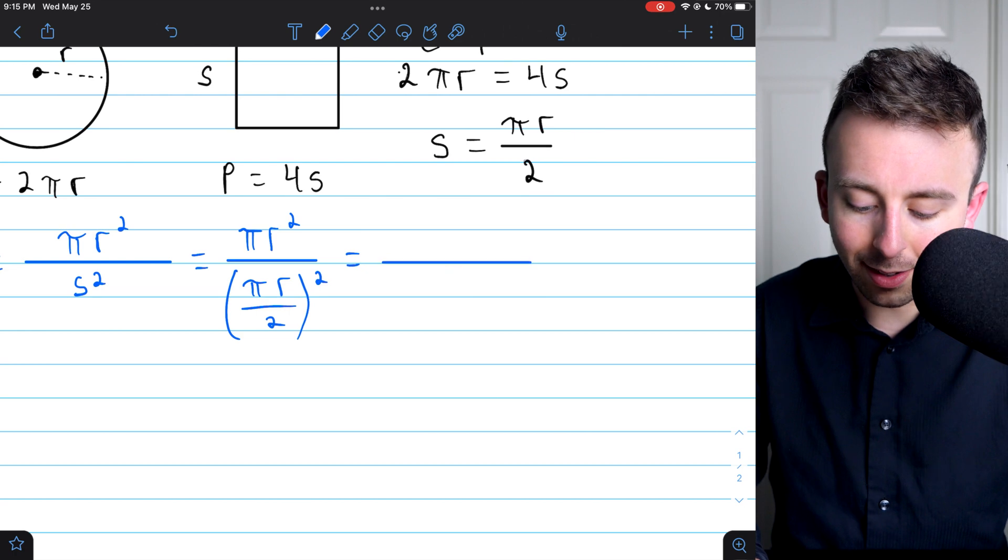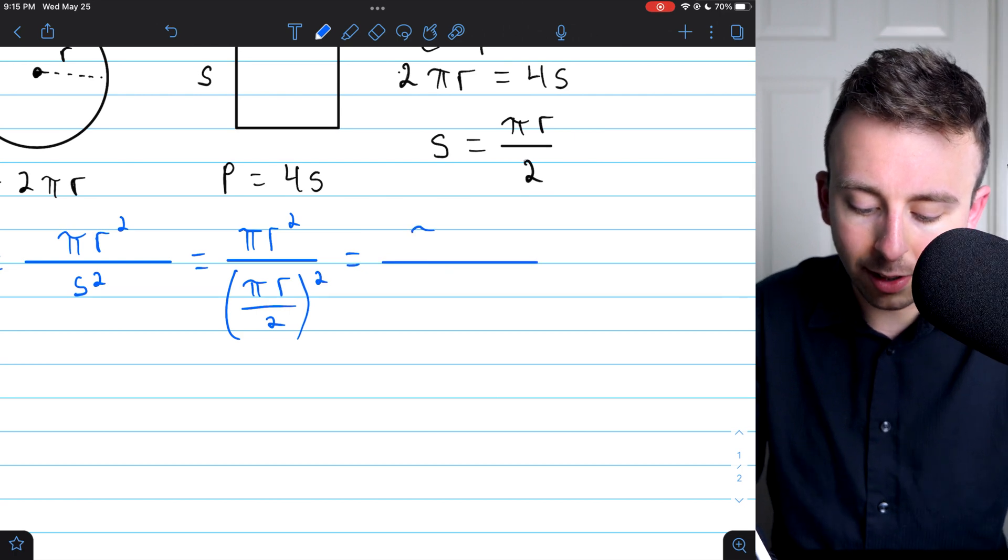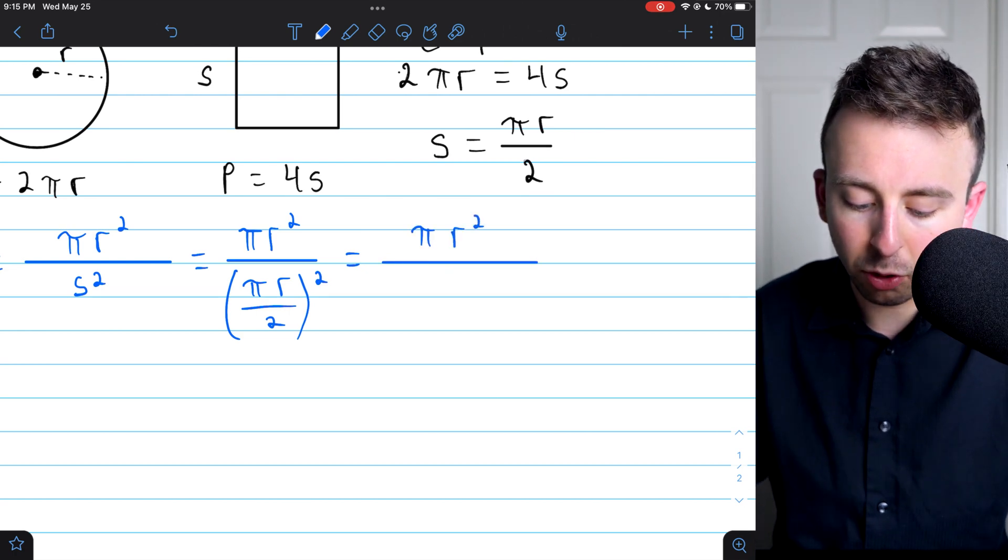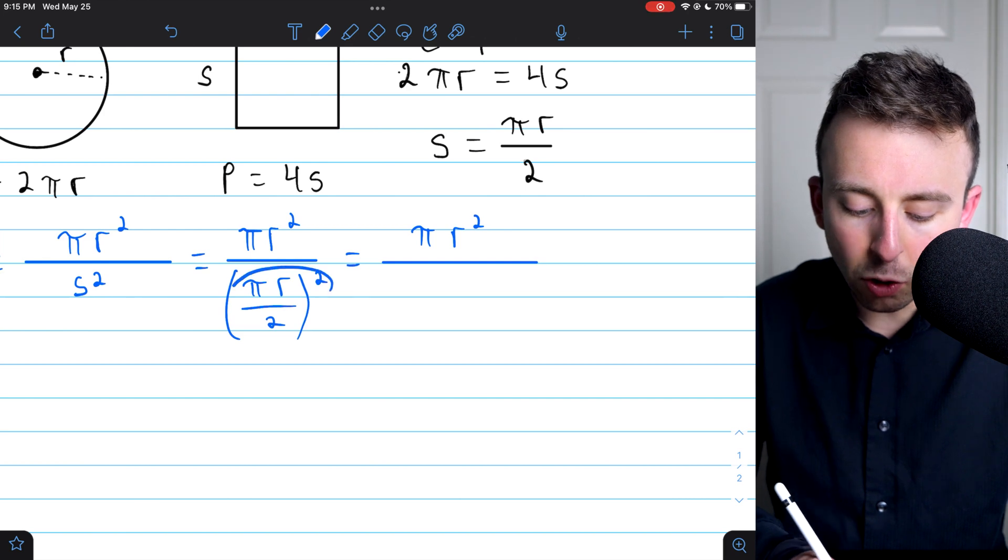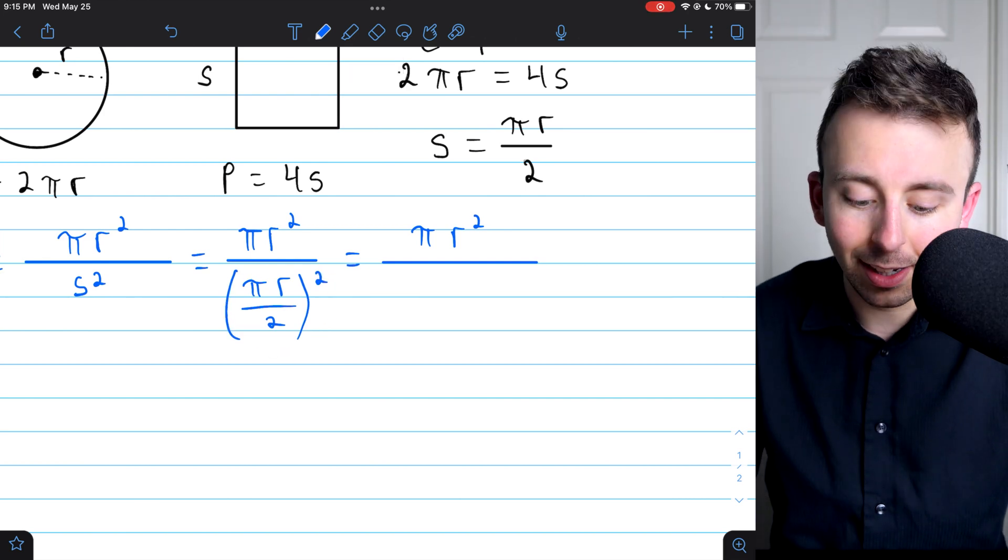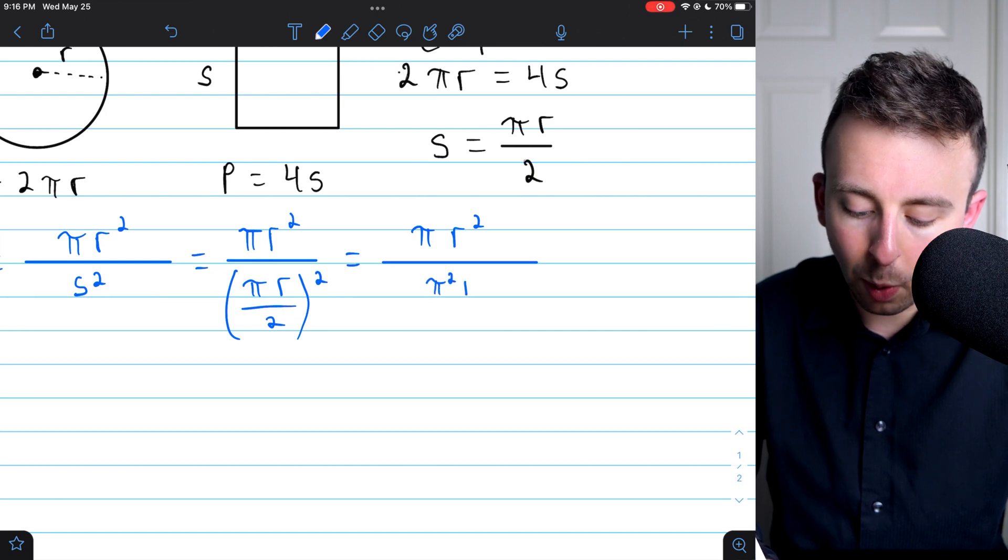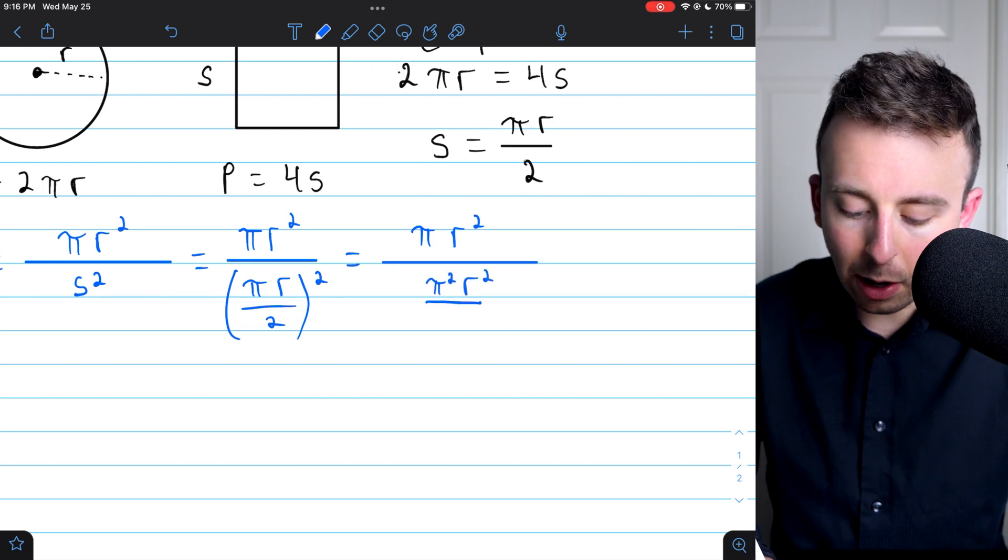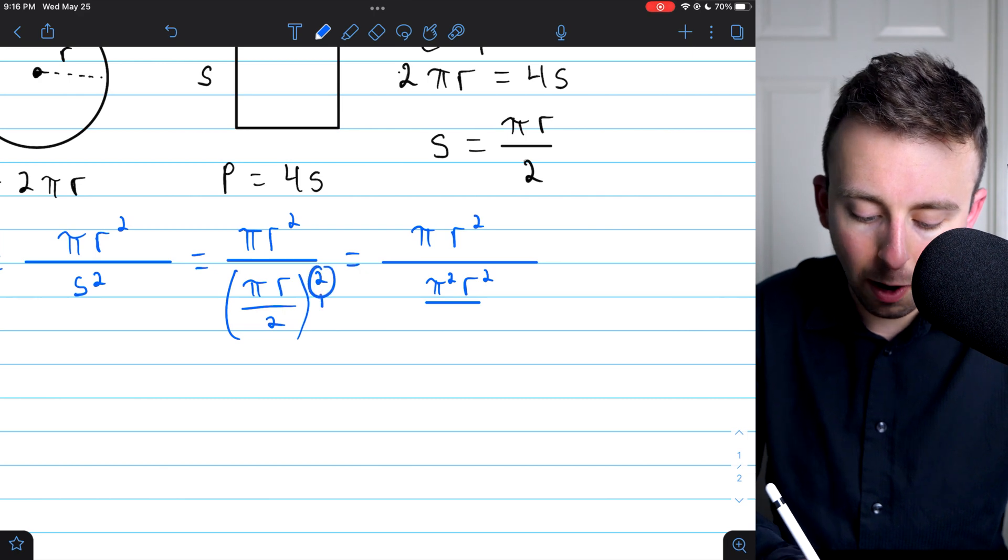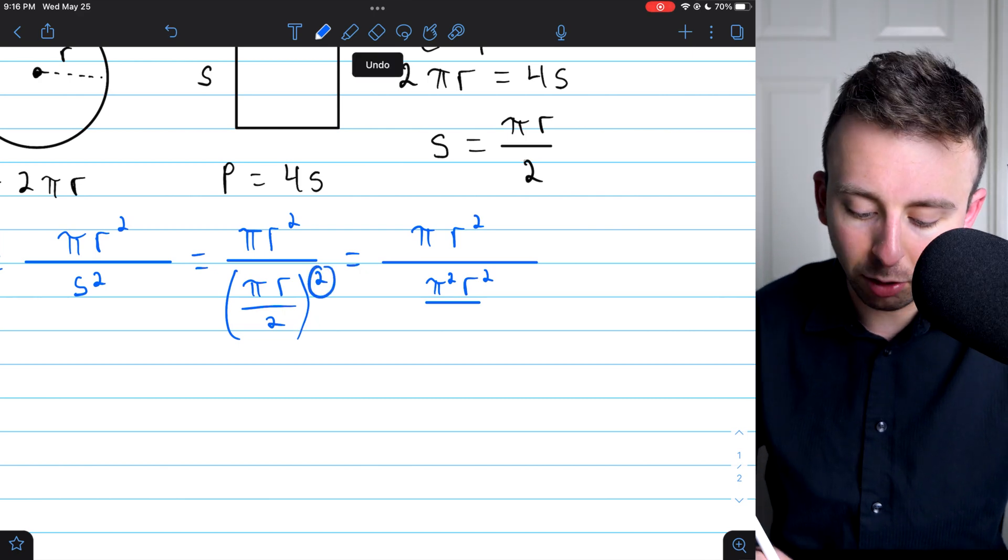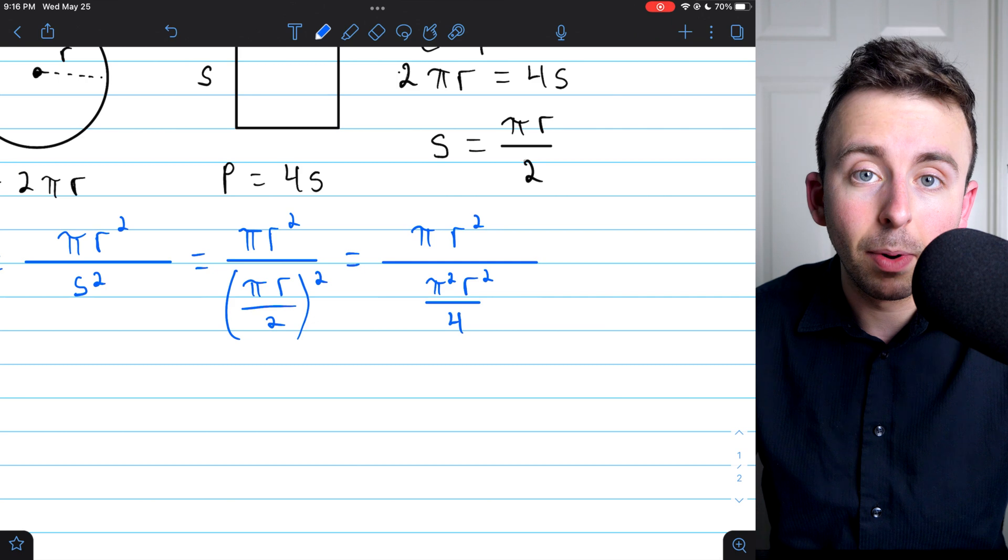All right, so what is this equal to? Well, in the numerator, we've still got πr squared. Now, let's actually do the squaring here in the denominator. When we square the numerator, that becomes π squared r squared, and we also have to square the denominator, and so that's going to become divide by 4.